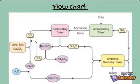This is the flow chart of our industry. We will discuss each step accordingly. There are four chambers in this industry: first is the Ammoniating Tower, second is the Carbonating Tower, third is the Lime Kiln, and fourth is the Ammonia Recovery Tower.